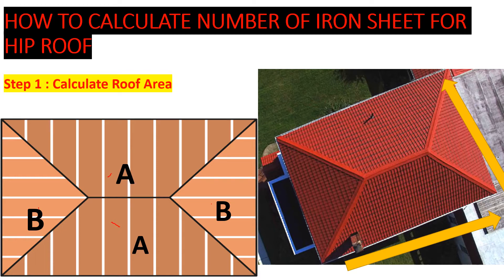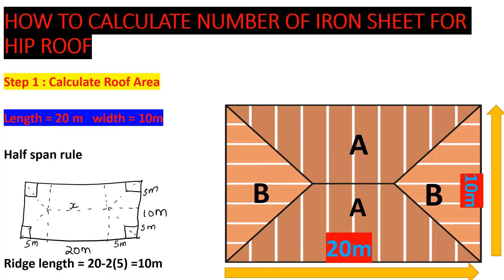The first thing you do before anything else is calculate the roof area. To calculate the roof area, we need to get the length and the width. In this case, we have 20 meters length and 10 meters width, measured using the top view plan. This is not the length and width of the house itself — it's the top view plan.